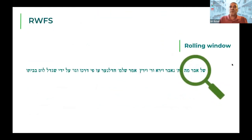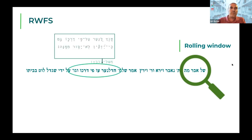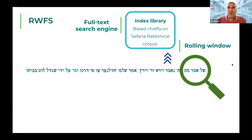The best way to explain how Rufus works is by demonstrating it on a short example. This is an actual line taken from the HTR — the handwritten text recognition — of the Parma 3122 manuscript. As an HTR text, it also has errors, but on top of that, this manuscript is different in many ways from the print editions, from the documents that we're searching for parallels in. This is an example of a mistake of the HTR — it's actually a very partial biblical quote. We also try to identify those quotes.